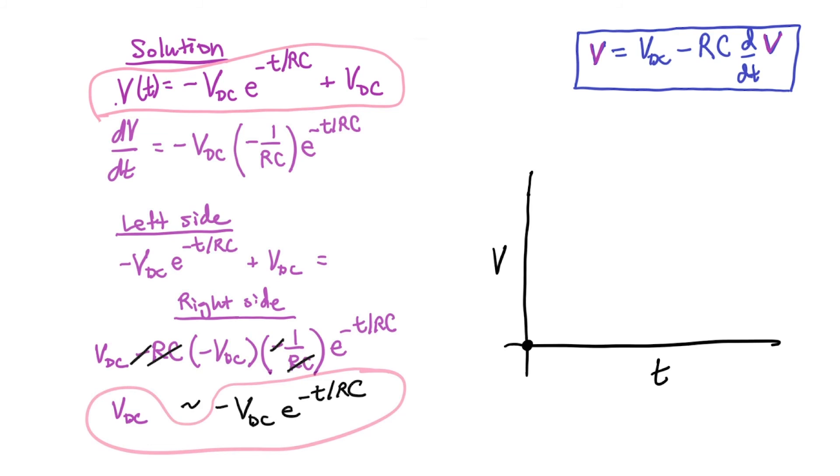It also makes sense that as the time gets to be very long that the capacitor will charge and the final voltage across the capacitor will be VDC. So I can predict that the voltage will approach VDC after a long period of time. And because it's exponential, I can see that it's going to look like this.